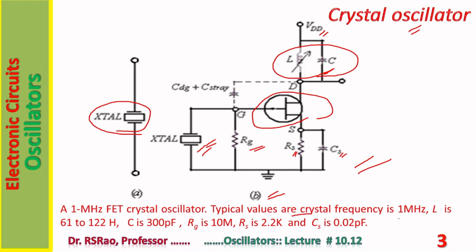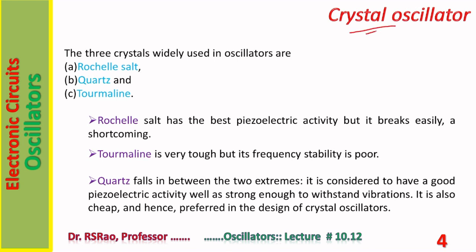Typical values: the crystal frequency is 1 megahertz, which is also the oscillator frequency. Three crystals are widely used in these oscillators: Rochelle salt, quartz, and tourmaline.